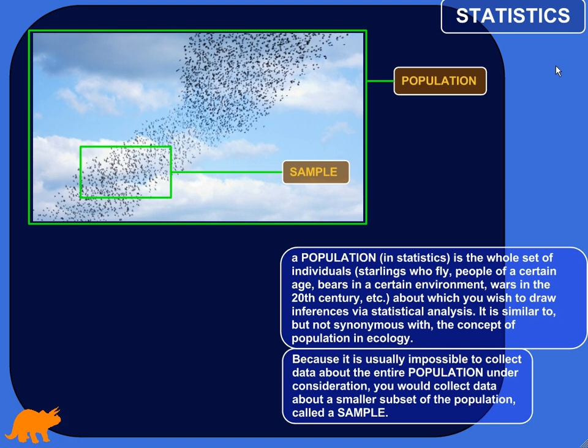You want to do a study on honeybees who live on commercial honey farms, but can you honestly go all around the world to every single commercial honey farm and collect data on every single honeybee? No, that's impossible. Yet your study will have implications for all honeybees on commercial honey farms. So what you do is take a sample — collect data about a smaller group of honeybees on commercial farms — and do your statistical analysis, collecting numbers on how often they get sick or how much honey they produce.